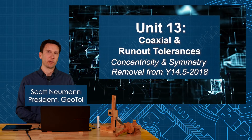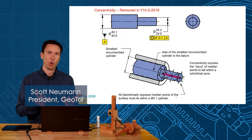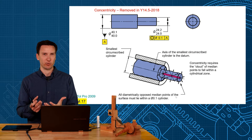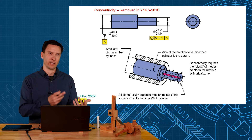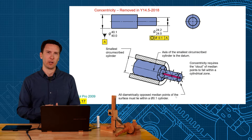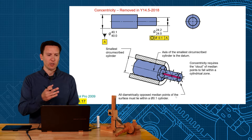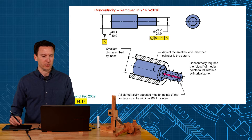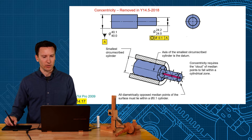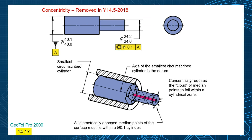In this quick video I'm going to show you why concentricity and symmetry symbols were removed from the 2018 standard. I'm going to use a couple pictures from my earlier 2009 workbook because that's where I had the concentricity symbol.